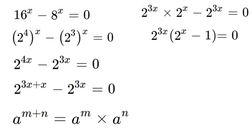Now that we have done that we can simply solve for 0 by setting both sides equal to 0. Because if either the 2 to the power of 3x or 2 to the power of x minus 1 is equal to 0, then the whole equation is equal to 0.